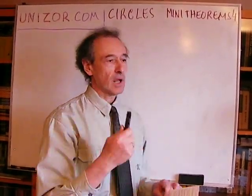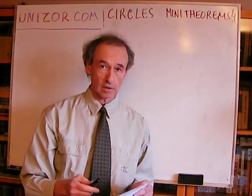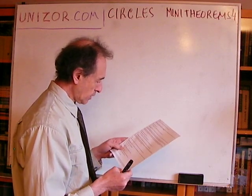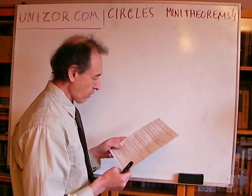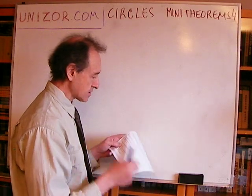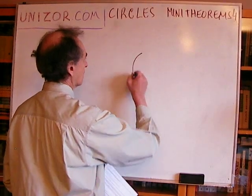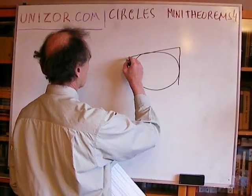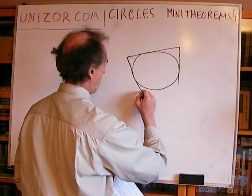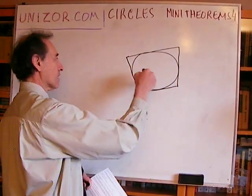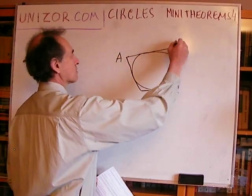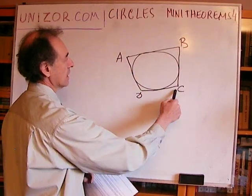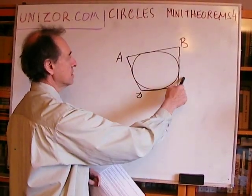These are very simple consequences of the characteristic property of inscribed quadrangles having opposite angles summing to 180 degrees. Now: a quadrangle that circumscribes a circle — meaning all four of its sides are tangent to a circle — has sums of opposite sides equal to each other. Instead of inscribing, we are circumscribing. We have a circle inscribed into a quadrangle, and this theorem says that the sum of opposite sides is the same.